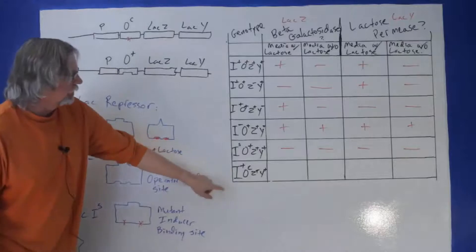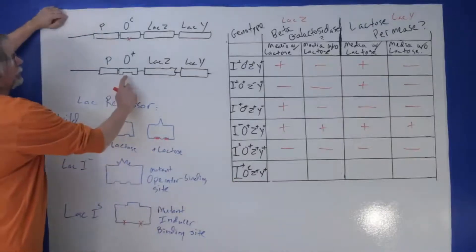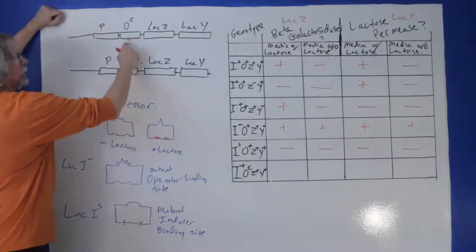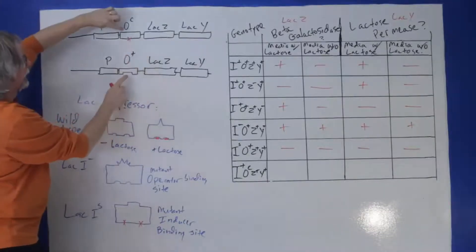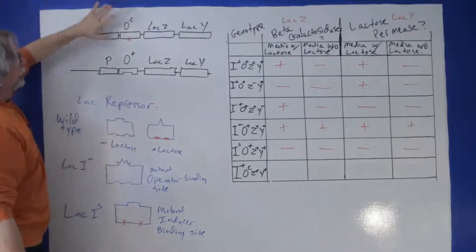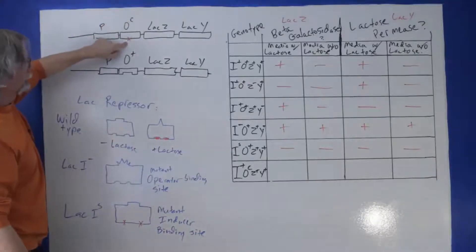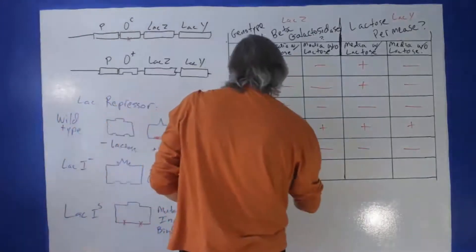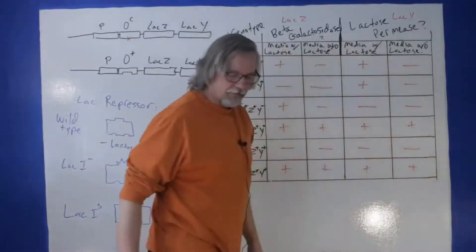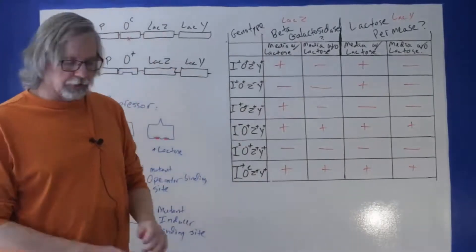Finally, this genotype is an operator-constitutive mutation. In this mutation, the sequence of the operator is mutated so it's not capable of binding the repressor. This operon can never be shut off — constitutive expression of both lacZ and lacY. That's how that answer comes about.